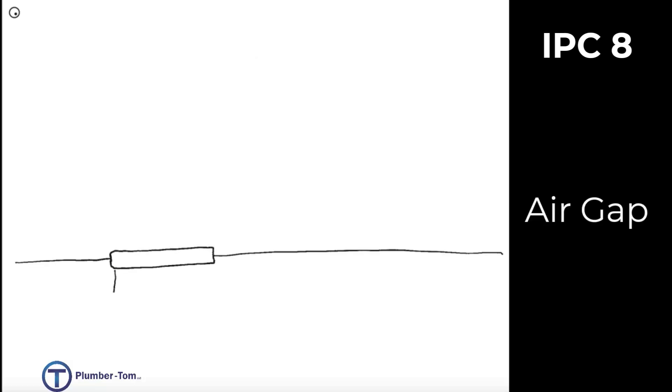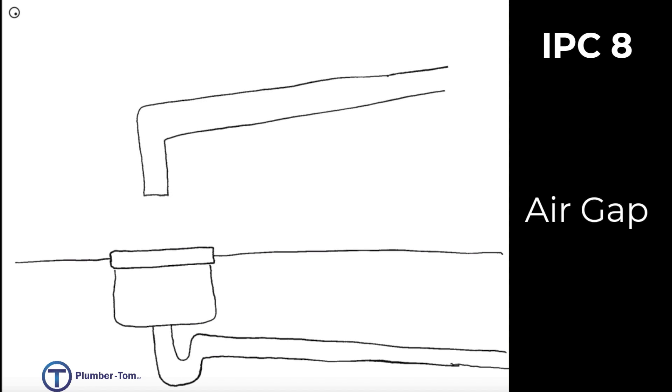As we consider the installation of this air gap, we have say a floor sink and an indirect waste pipe that's going to be dumping into that sink. Now if we follow the flow of water in the drain, it's going to hug the bottom of the drain until it comes to the end and then it starts to swirl and hug the sides of the pipe.